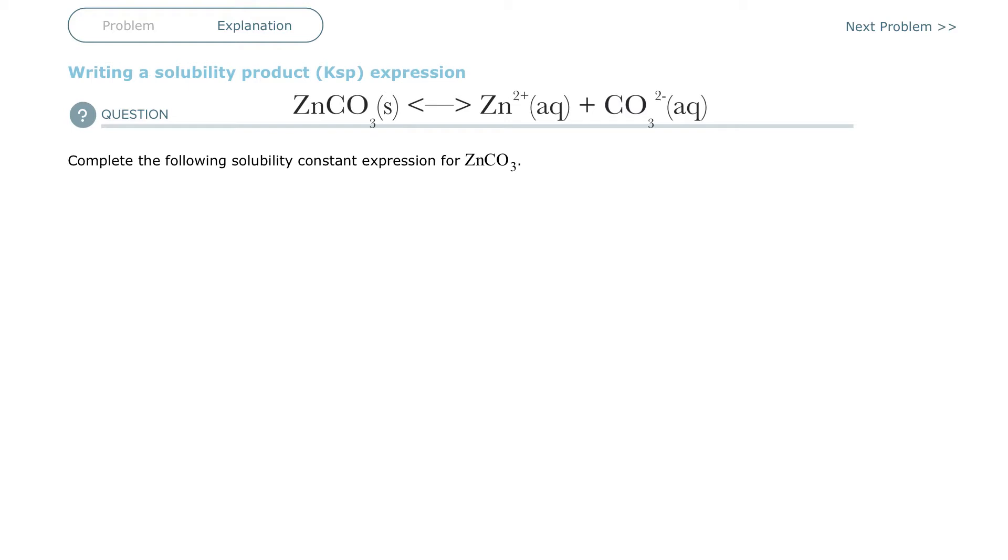Solubility product expression, Ksp, has to do with when something is saturated. If you dissolve sugar in iced tea and you end up with an inch of sugar at the bottom of your cup, all of the sugar that the water can hold is dissolved, and then the rest that you put in the cup can't dissolve, so it falls to the bottom.